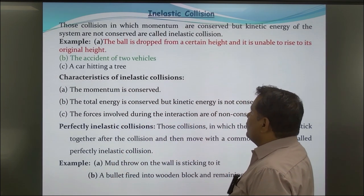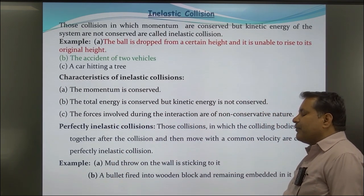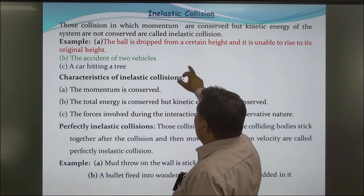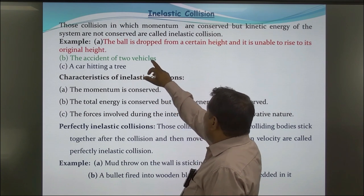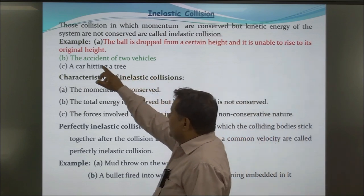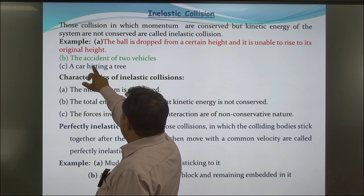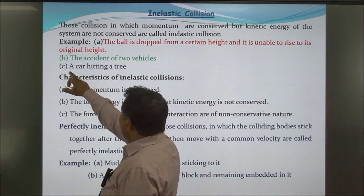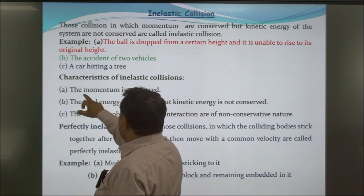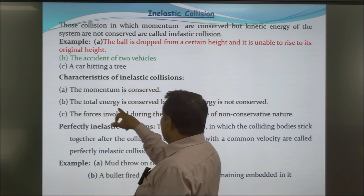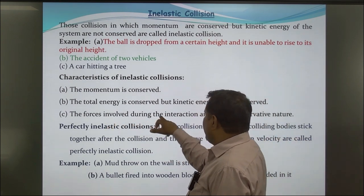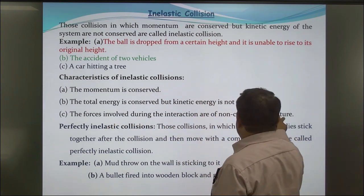Inelastic Collision: Those collisions in which momentum is conserved but kinetic energy is not conserved are called inelastic collisions. For example, a ball dropped from a certain height that is unable to rise to its original height. Other examples include the accident of two vehicles and a car hitting a tree. Characteristics: momentum is conserved, total energy is conserved but kinetic energy is not conserved, and the forces involved during interaction are of non-conservative nature.